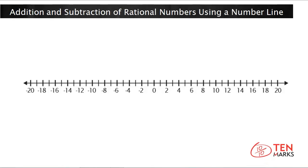To add means to put together. So if you wanted to add 2 plus 6 on the number line, you would find the number 2, count up by 6, and the number you reach is the sum. The sum is 8. When you're adding, you go to the right of the number line because numbers to the right of 0 get larger, while numbers to the left of 0 are negative and get increasingly negative as you go further left.